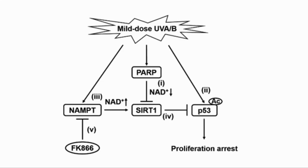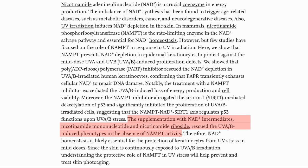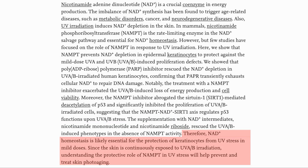The NAD depletion also deactivated P53, which stopped the cell from proliferating. This makes sense, as if the DNA is getting damaged and the cell does not have the NAD for PARP to repair it, it is better for the cell not to proliferate. These were in vitro, and adding NMN or NR was able to rescue the damaged cell in the absence of NAMPT, presumably by boosting the NAD levels. Therefore, NAD homeostasis is likely essential for the protection of skin cells when exposed to UV radiation.